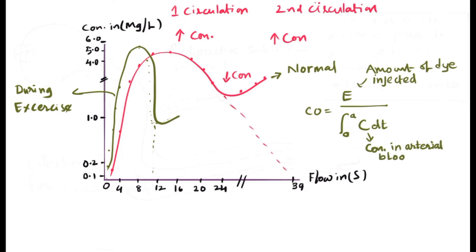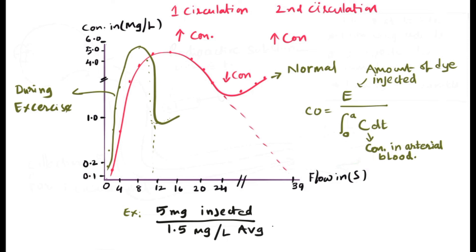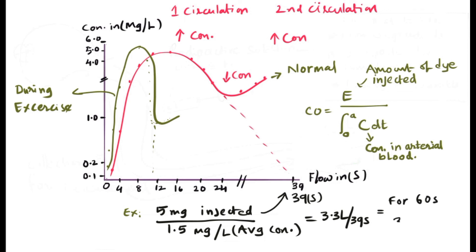For example, to calculate cardiac output under the dye dilution method: if 5 mg of substance is injected and the average concentration observed is 1.5 mg per liter, we get 5 divided by 1.5 over 39 seconds, which is approximately 3.3 liters per 39 seconds. Multiplying 3.3 by 60 divided by 39 gives approximately 5.12 liters per minute as the cardiac output under the dye dilution method.